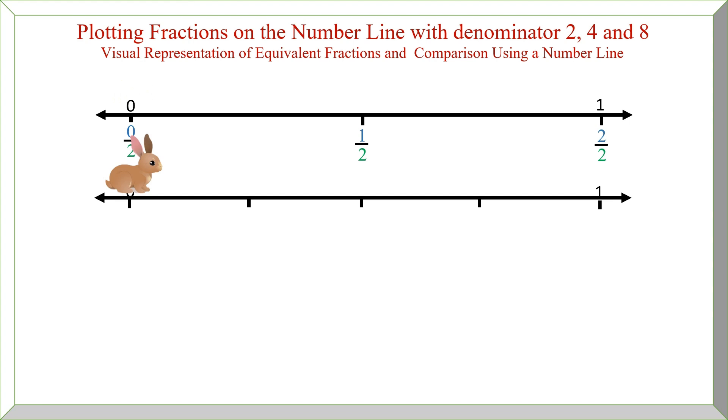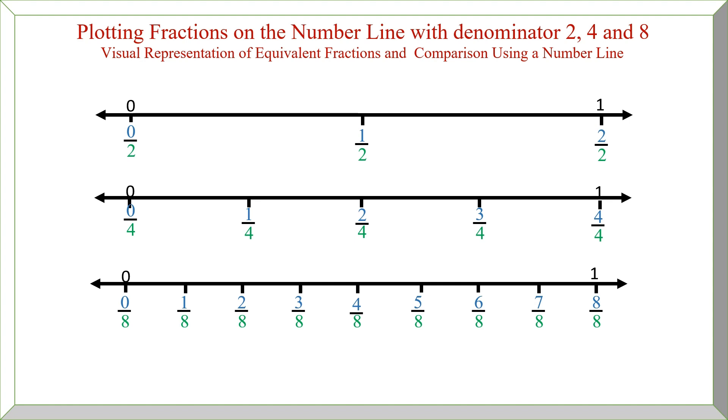In the same way, we will take another number line with denominator 4 and we will mark the points 0 by 4, 4 by 4, and then 2 by 4, 1 by 4, and 3 by 4. Now 2 by 4 is equidistant from 0 by 4 and 4 by 4. The number line 0 to 1 is divided into 8 equal parts, and 4 by 8 is equidistant from 8 by 8 and 0 by 8.